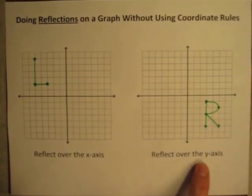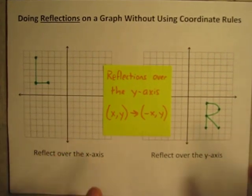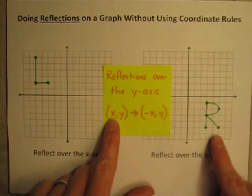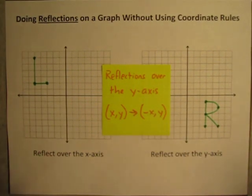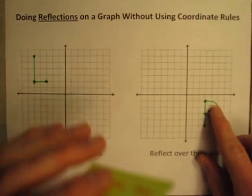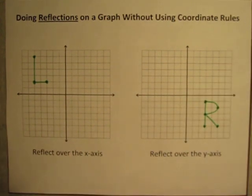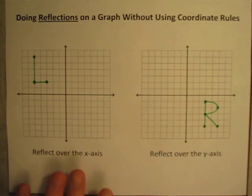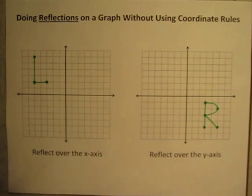Or if I'm going to reflect this letter R over the y-axis, I would use a different coordinate rule. I could take the coordinates of all five points in the letter R, change the x value to the opposite of x, keep the y coordinate the same for each point, create a list of new coordinates, and then plot those to get the mirror image. But that's kind of a pain sometimes — it's a long process when you can just visualize the reflection. So I'd like to show you how to do these reflections without bothering with coordinate rules.